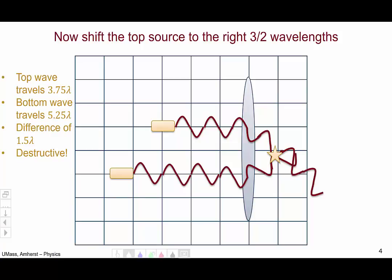The top wave has traveled three and three-quarter wavelengths, while the bottom wave has traveled five and a quarter. The difference in optical path length is therefore one and a half wavelengths, and so we have destructive interference.